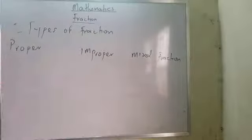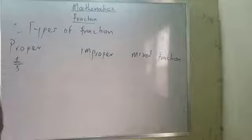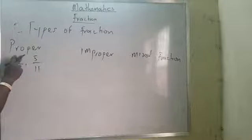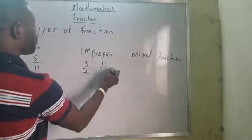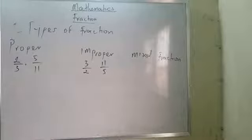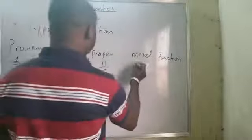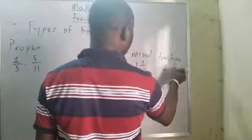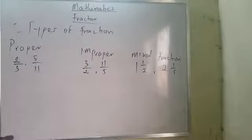When we talk about proper fraction, what is small is on top and what is bigger is on the bottom. For example, two over three, or five over eleven — this is a proper fraction. An improper fraction is the reverse, like three over two, or eleven over five. A mixed fraction is generated from an improper fraction — for example, one and one over two, or two and one over five. Take note of all of these very well.